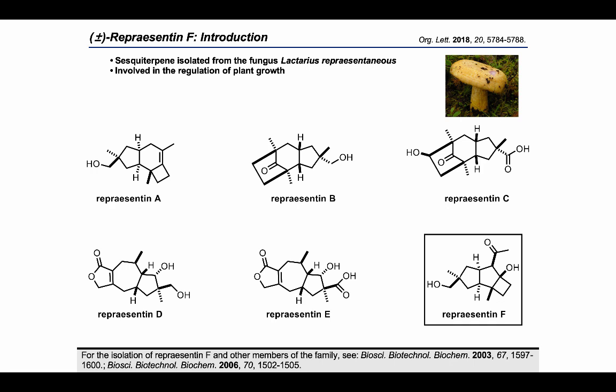Regarding its structure, the most characteristic feature is its tricyclic skeleton with an unusual anti-ring fusion, previously only found in fused sesquiterpenes. Its highly functionalized cyclobutane ring with two adjacent quaternary carbons is also structurally remarkable and a motif rarely encountered in nature. At the outset of our work, there was no total synthesis of representin F reported, and its absolute configuration had never been determined.